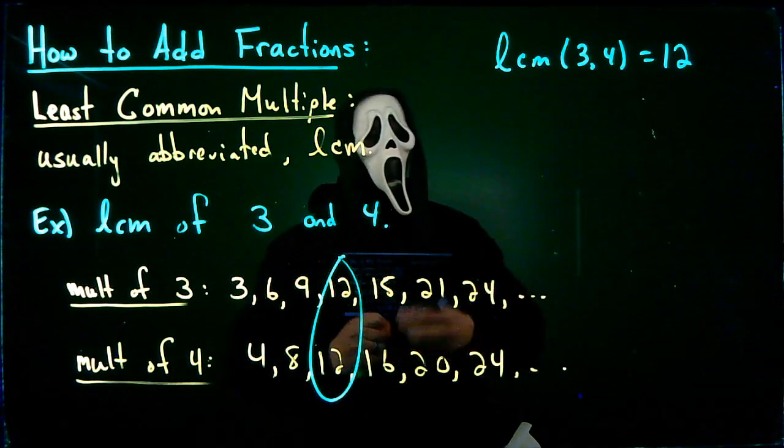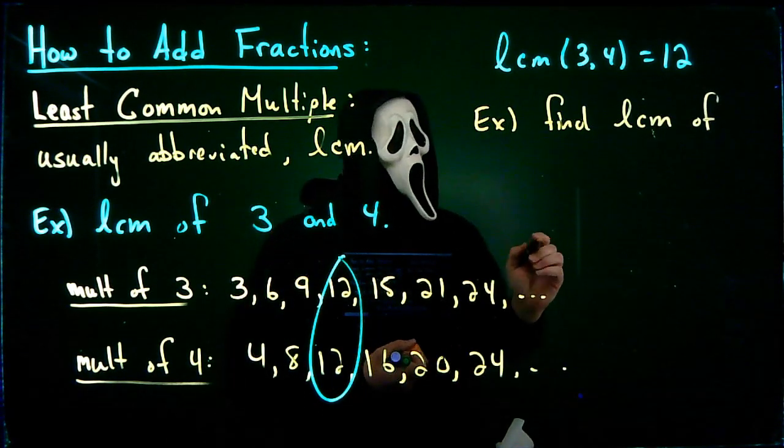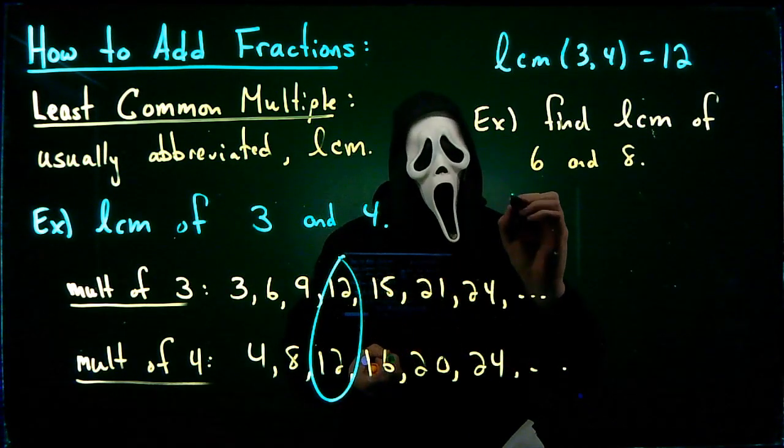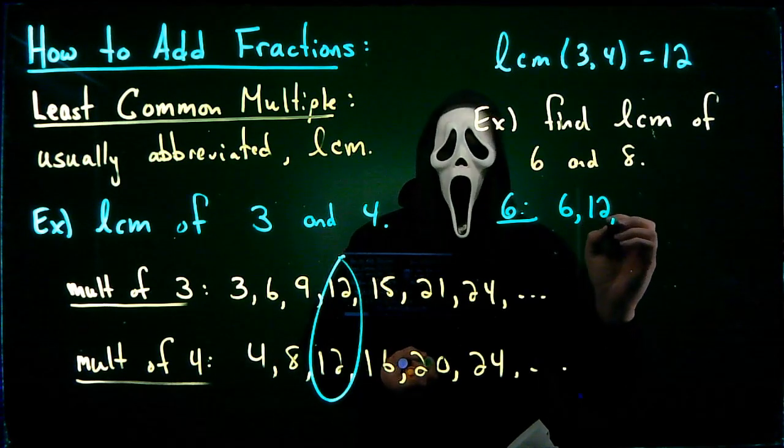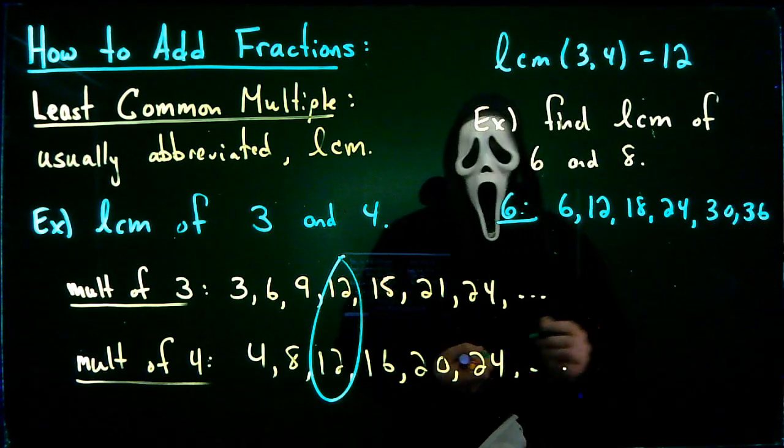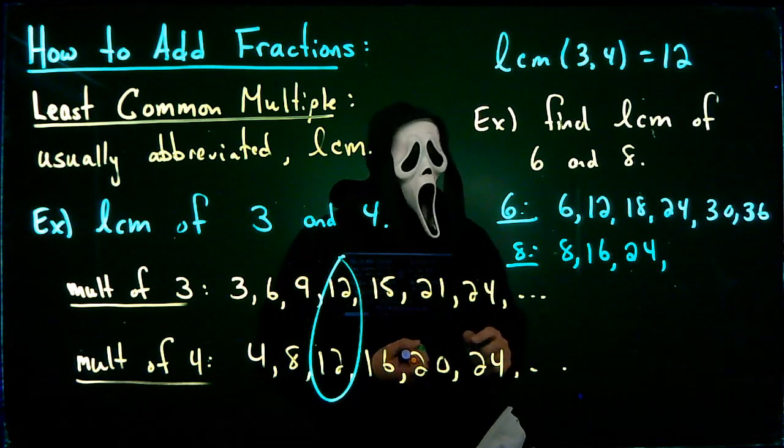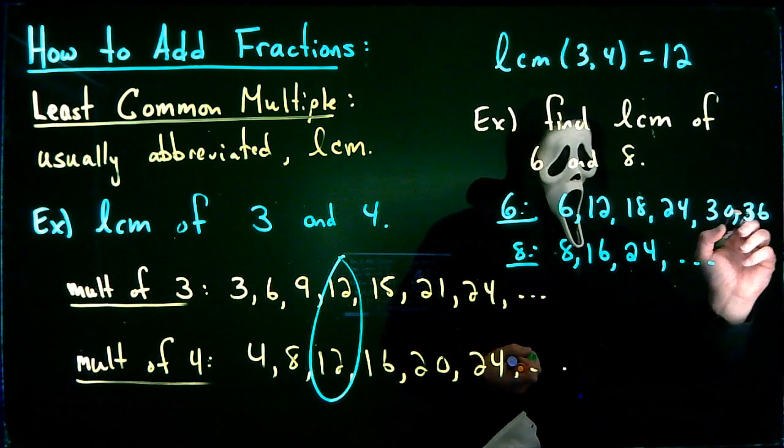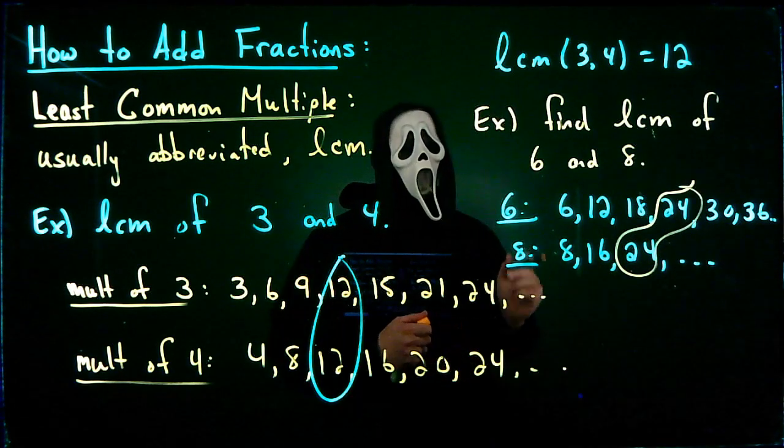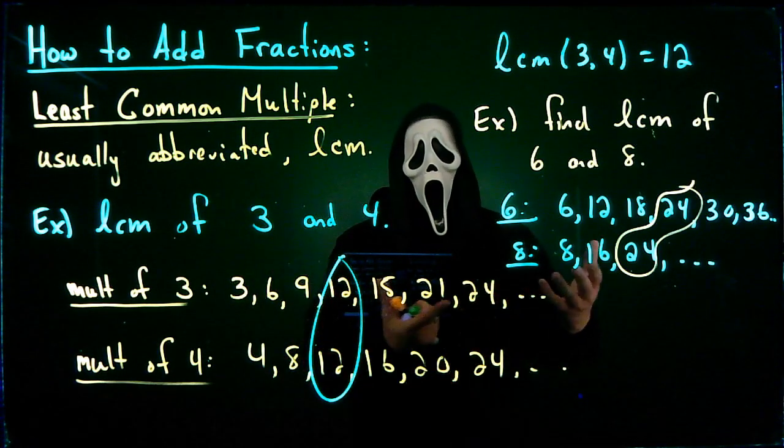One more example. Let's do the least common multiple of 6 and 8. If I look at multiples of 6, we would have 6, 12, 18, 24, 30, 36, etc. If I look at common multiples of 8, we get 8, 16, 24. And notice that I already have a match here, so I might as well go ahead and stop. There's, of course, more here and more up here. But of all of the multiples, the least common would be 24. So the least common multiple of 6 and 8 would be 24. So this is one way that you could find the least common multiple. There are other ways, but this just gives you one sort of concrete quick way to do it.